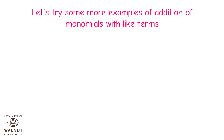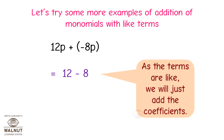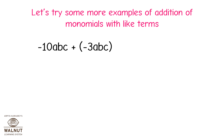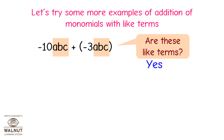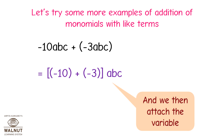Let's try more examples of addition of monomials with like terms. 12p + (-8p): are these like terms? Yes. So that equals 12 - 8 = 4p. -10abc + (-3abc): as the terms are like, we add the coefficients and attach the variable abc. So the answer is -13abc.